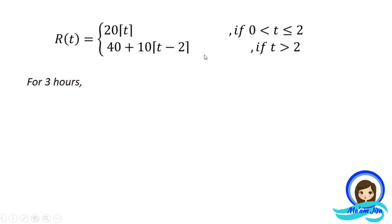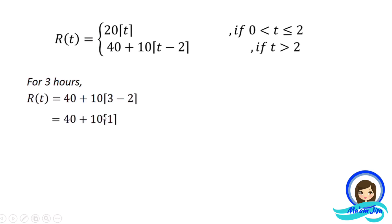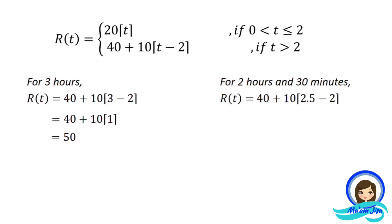Substituting t = 3 into the second equation: 3 − 2 = 1, then 10 times 1 = 10, added to 40, means you pay 50 pesos. What if the user uses 2 hours and 30 minutes? That falls in the second interval, so we use the second equation. Substituting 2 hours and 30 minutes, which equals 2.5 hours: 2.5 − 2 = 0.5.